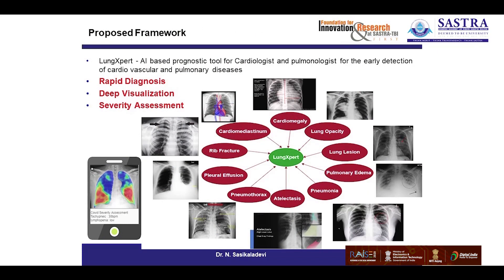This tool is basically built on top of X-ray images. When you give an input as X-ray images, it automatically categorizes the images into different types of diseases — different types of pulmonary disease as well as two different types of cardiovascular disease.